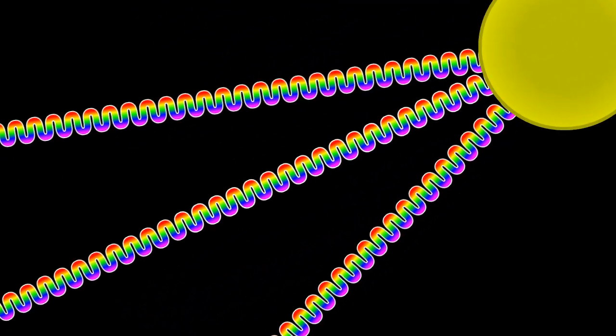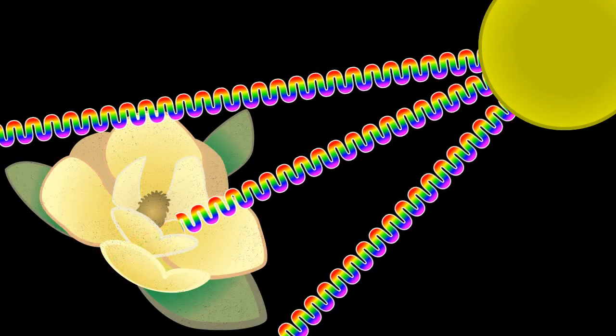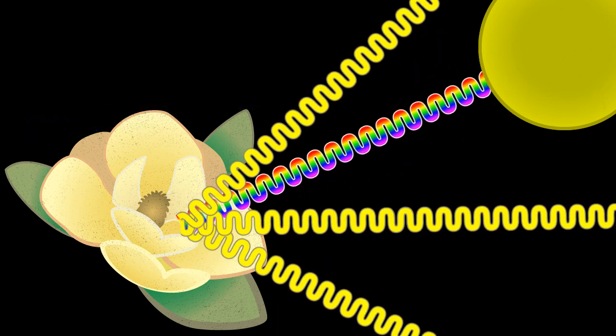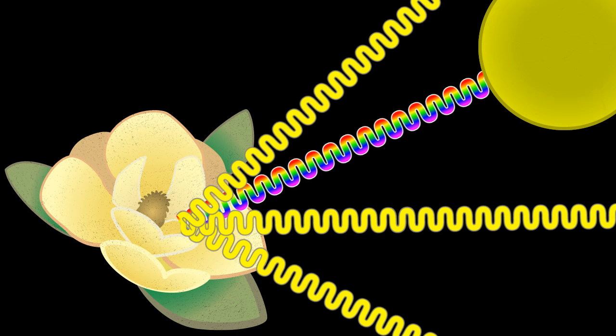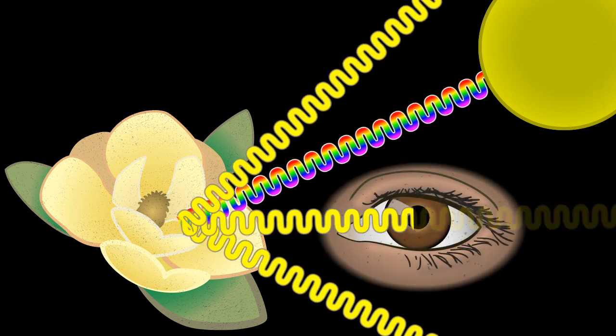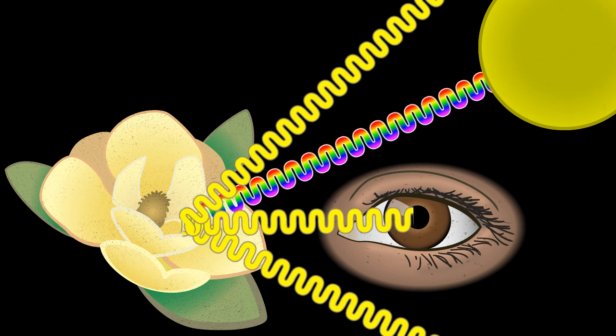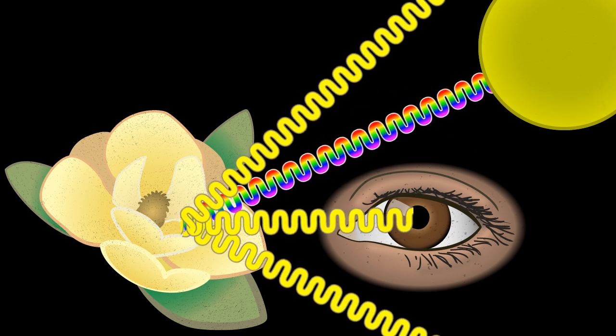We say that the flower is yellow, but it's actually reflecting yellow light. If some of the reflected yellow light enters our eye, we see a yellow flower. We do not see the rest of the light that is absorbed by the flower.